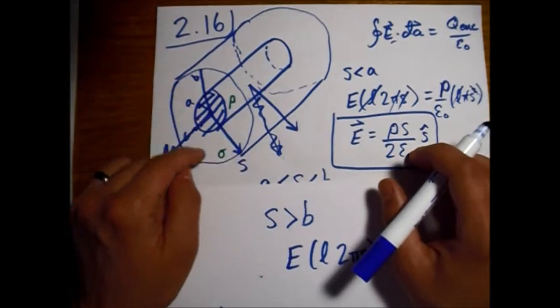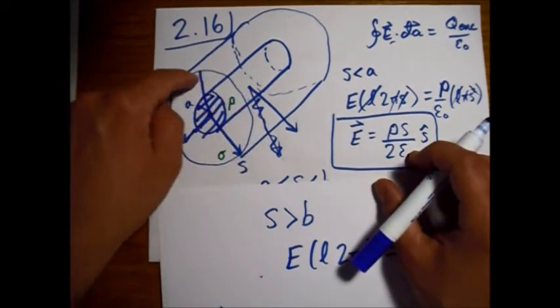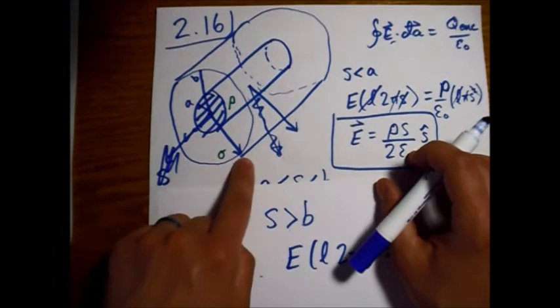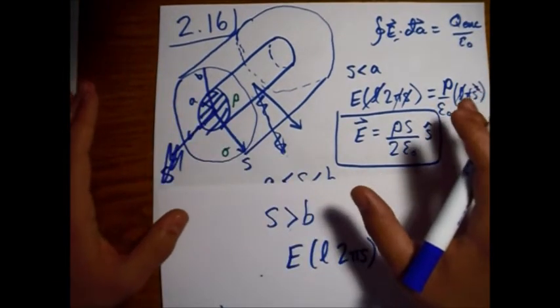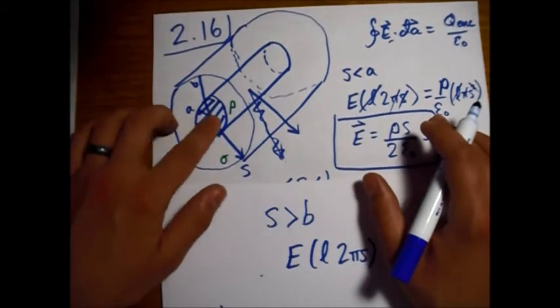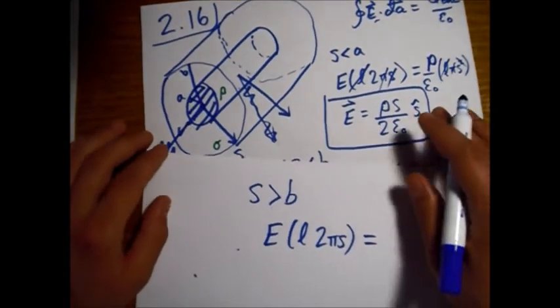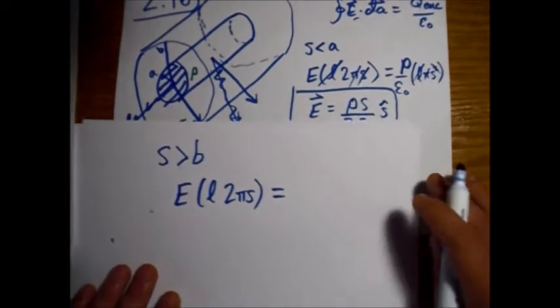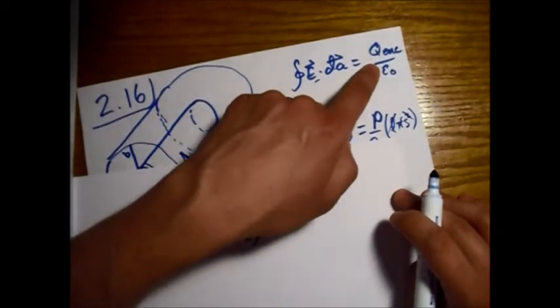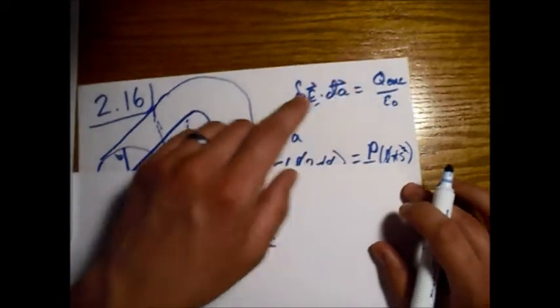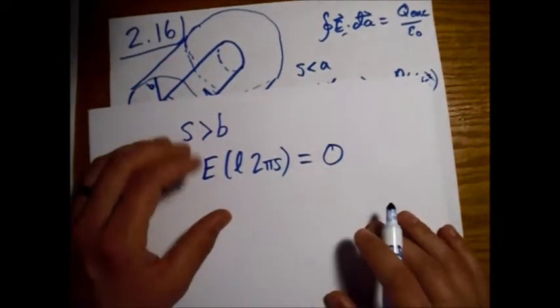Once we get outside, once we cross this very thin shell - that's a fine line but once you cross it - you've just passed through this shell of opposite charge and it completely cancels out everything that's inside from the cylinder we talked about before. Basically, long story short, the charge enclosed here is zero.